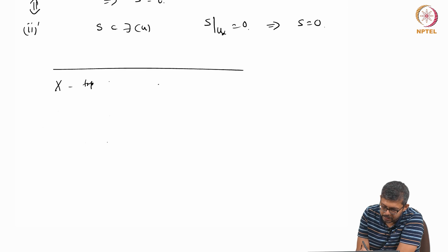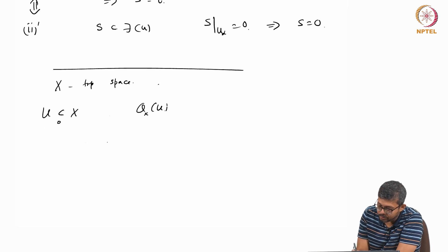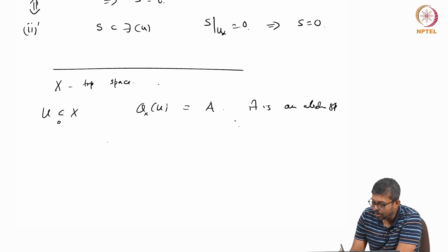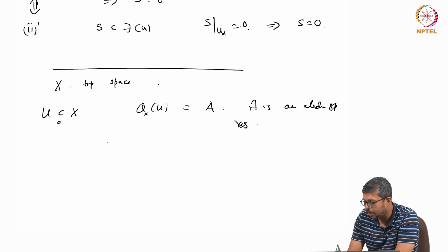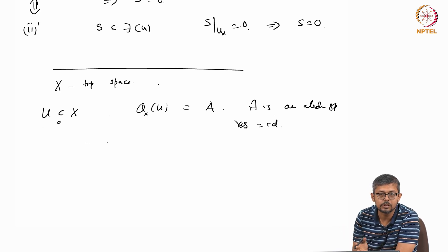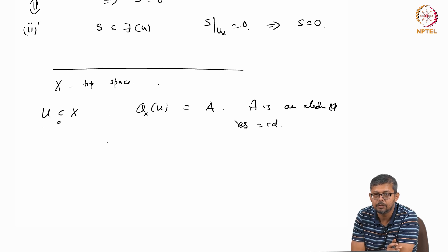X is any topological space. For every open U, define F of U to be the abelian group A. All restriction maps are the identity map. This will satisfy the pre-sheaf property.